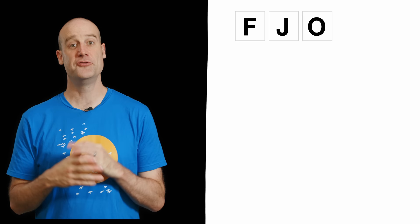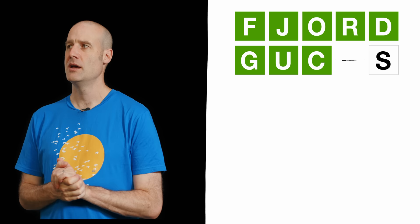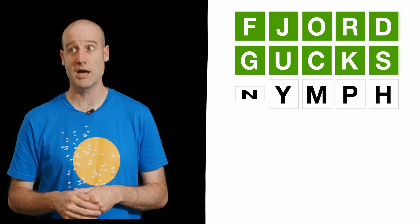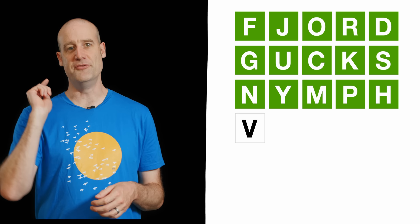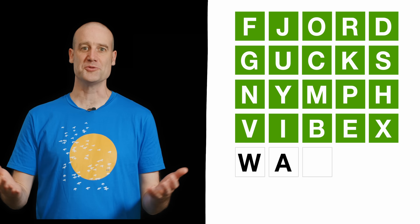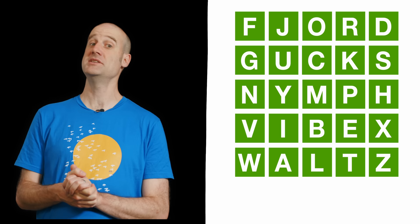Five wordle words that use 25 unique characters. And they are Fjord. Good old Fjord. Gucks. Now gucks as in, there's some guck on this. There's some guck on that. These are different gucks. Nymph, from both biology and Greek mythology. You've also got Waltz. Vibex. Yeah, vibex is back. Something to do with veins. Real word, according to Wordle and biologists. And finally, waltz.